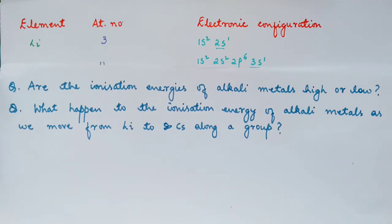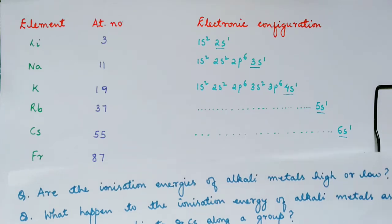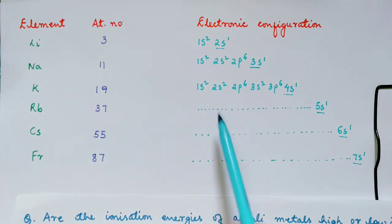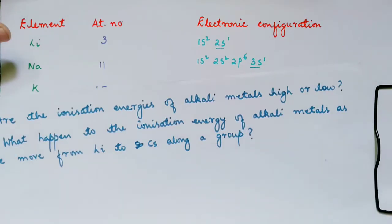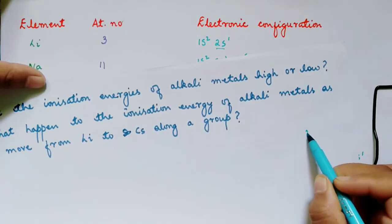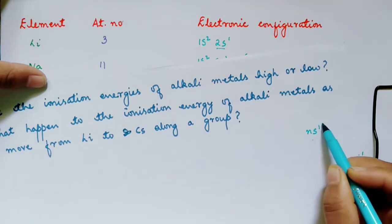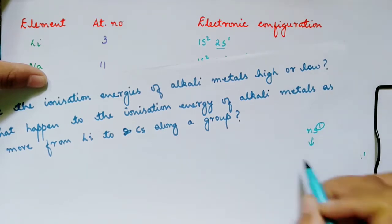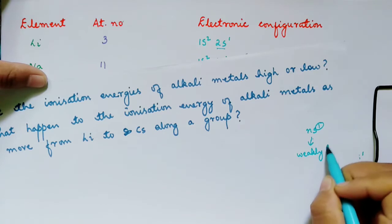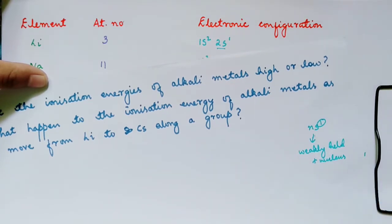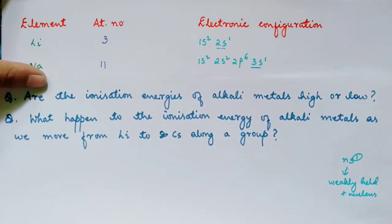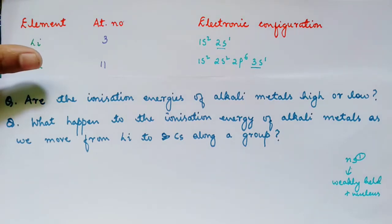The first question: will the ionization energies of alkali metals be high or low? For that, you need to know the electronic configuration. We see that the alkali metals have one electron in their valence shell. Generally, we can denote the valence electron in the alkali metals as NS1. Now, there is only one electron — this will be weakly held with the nucleus. Since this one is weakly held with the nucleus, that's why the ionization energy is low in the case of alkali metals as compared to the other elements of the periodic table.